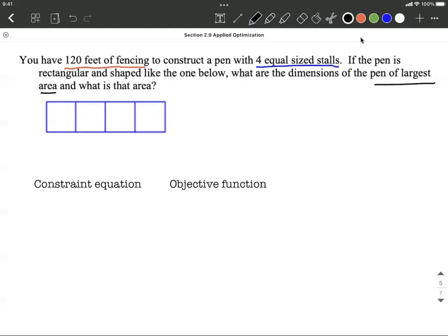As we get going on this, I would definitely suggest draw a picture if you haven't drawn one already. Next, I always like labeling my sides on a picture like this. We're going to create a constraint equation, basically our limitations on this, and then an objective function, trying to construct an equation, a function where we're trying to either maximize or minimize something.